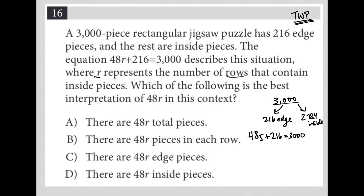If R represents the number of rows, I would think this would mean that there's 48 pieces per row, or 48 pieces per row minus the edge pieces, like not adding in the edge pieces. That's what I would think. But let's read the answers and see what it says.